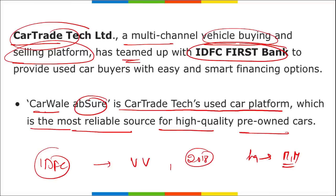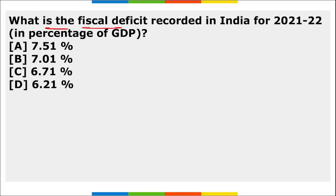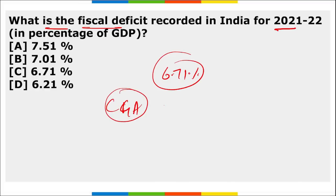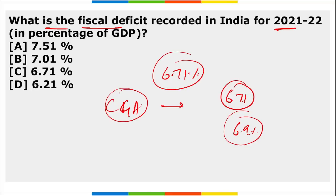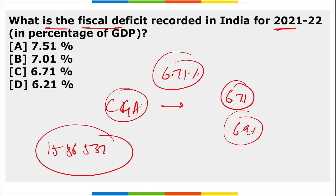The Controller General of Accounts (CGA) released the fiscal deficit for fiscal year 2021–22, which improved to 6.71% of GDP over the revised budget estimate of 6.9%. The fiscal deficit in absolute terms was provisionally recorded at Rs. 15,86,537 crore.